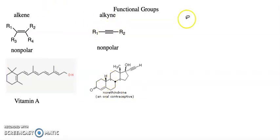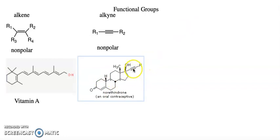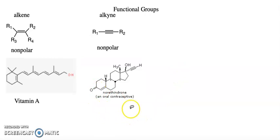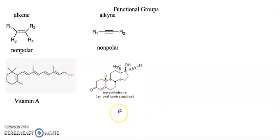An example of an alkyne is this one right here — you can see the triple bond. It also has a bunch of other functional groups in it. This is an oral steroid used as an oral contraceptive.